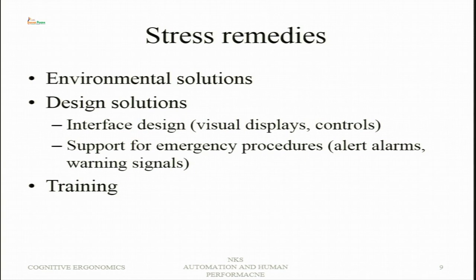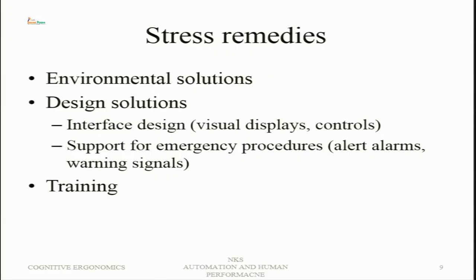What are the stress remedies? One is environmental solutions — changes in the environment in the form of ambient energy conditions, mechanical vibrations, and other conditions. For example, if the thermal or humid environment is unfriendly, control those conditions and find environmental solutions. Then interface design: visual displays and controls should be designed so that information is readily available and fewer resources are required to process it — information presented in a pre-processed or simple form.